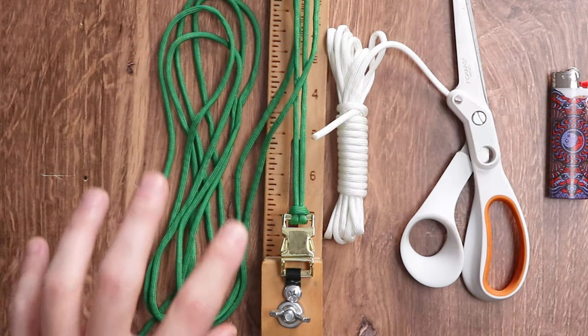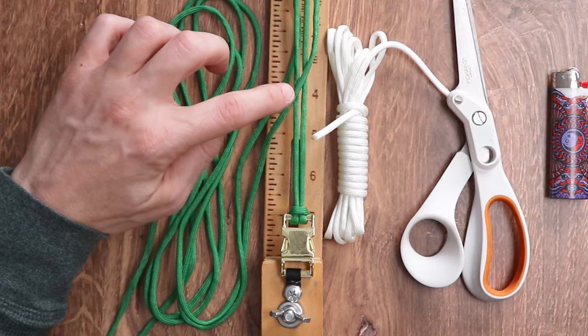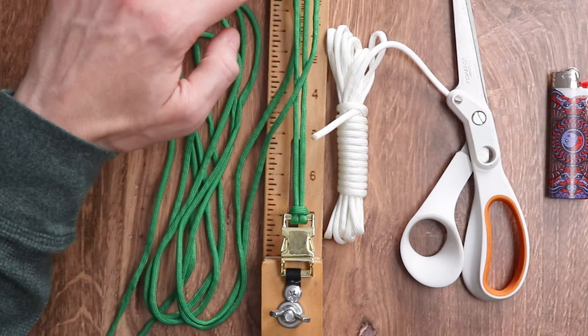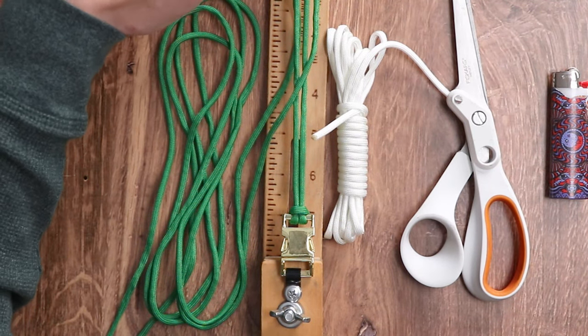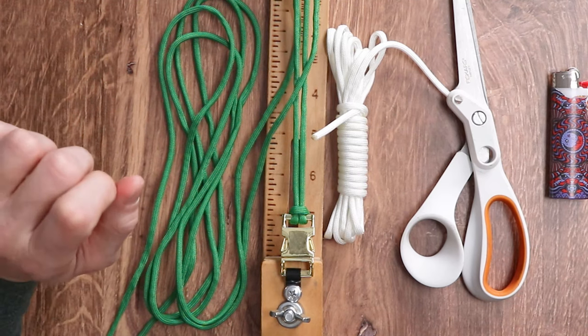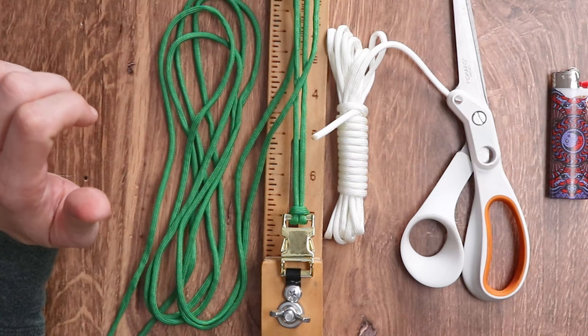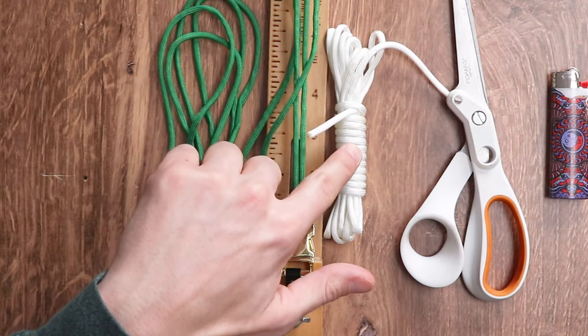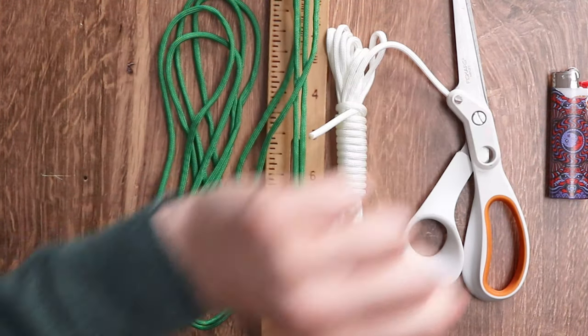For our Leprechaun weave bracelet today, we have 10 feet of 550 Kelly Green Paracord set up on our jig, attached to our three-fourths of an inch gold buckle. If you need a reminder on how to set up the two-strand inner core, we're going to link a previous video in the description below. We also have 10 feet of 550 Paracord in white, and of course, to end everything, we have our scissors and our lighter.